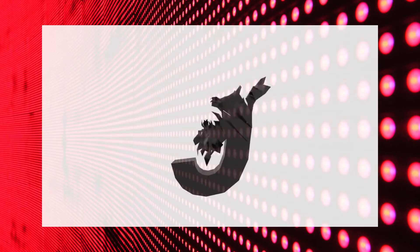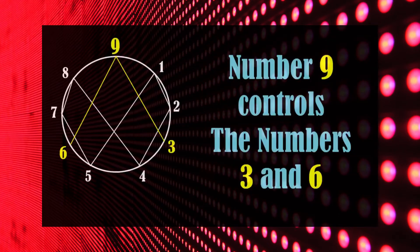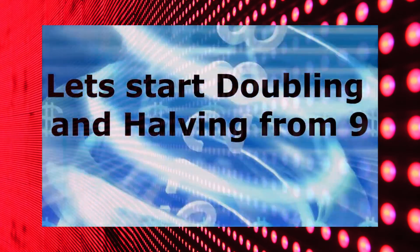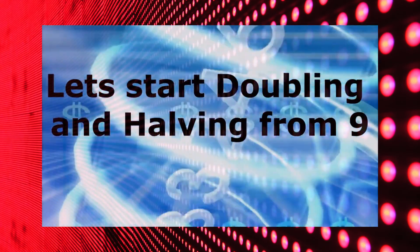But surprisingly, even this time, 9 is absent in the sequence. Actually, number 9 controls the numbers 3 and 6. Numbers 1, 2, 4 are controlled by number 3 while numbers 8, 7 and 5 are controlled by number 6. In this way, number 9 controls all the numbers. You will get incredible results when we start doubling and halving the numbers from number 9.